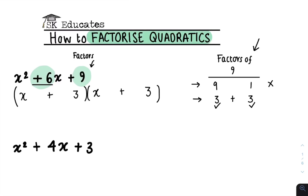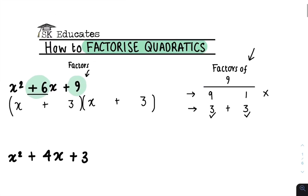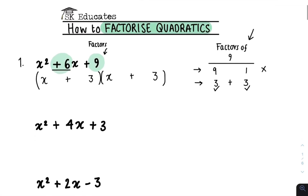Just to reiterate what we just did: you first open up two brackets, you put an x here and an x here. You then look at the last number, list the factors of that number, then choose the pair that adds or subtracts from each other to give you plus 6. And you're done. Let's go to the next example.